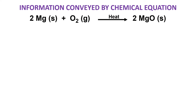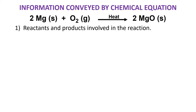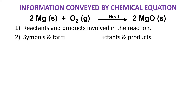Using the same chemical equation, the first thing a chemical equation tells us is the reactants and products involved in the chemical reaction. Who are my reactants and what are my products? My reactants here are magnesium and oxygen, and my product is magnesium oxide, MgO.